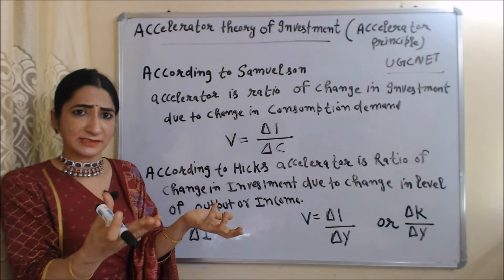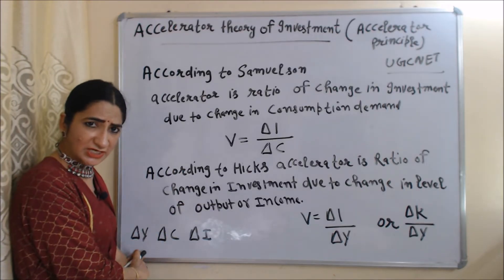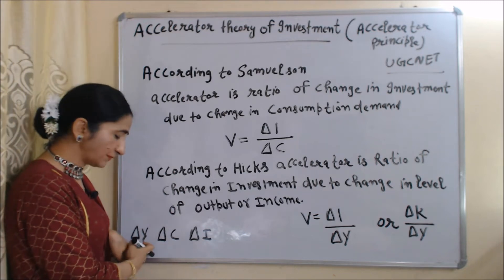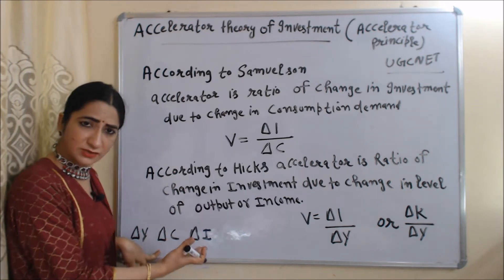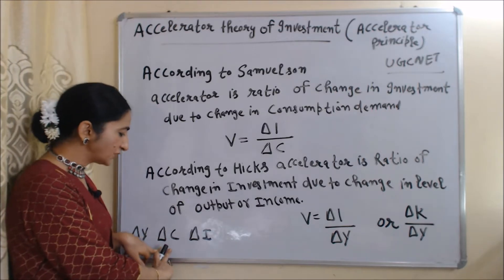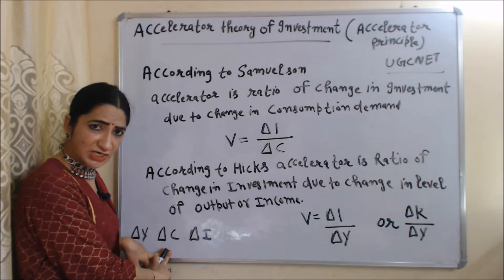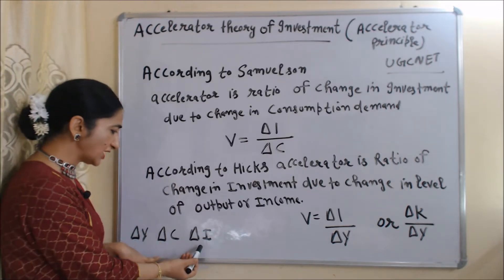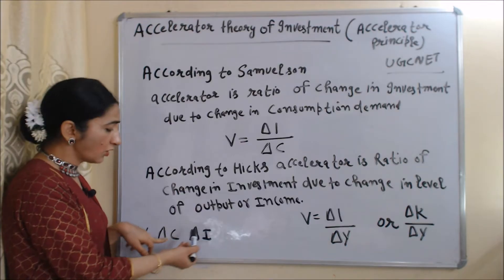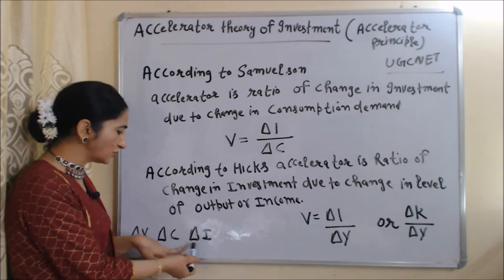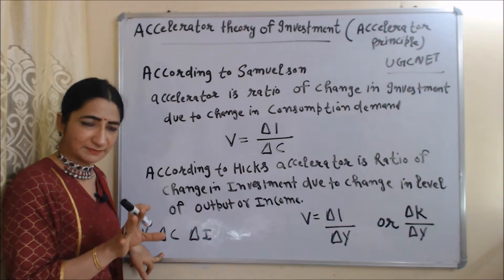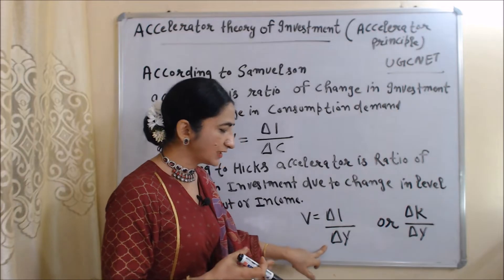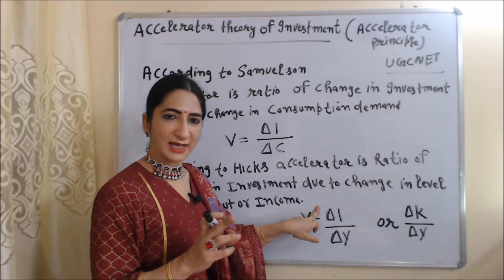Don't be confused — the meaning of both accelerators is the same. Initially, when income changes, consumption changes, because when people have more income they will consume more. Due to change in consumption, investment also changes. So we can say either change in investment is due to change in income or output, or due to change in consumption — the meaning of both is the same.